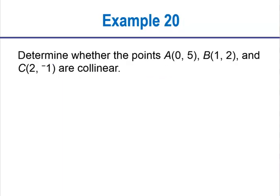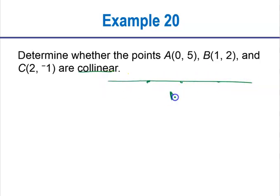Alright, here we go. Determine whether the points (0,5), (1,2), and (2,−1) are collinear. What does that mean we should do? This is using the distance formula. To determine if points are collinear, that means they don't make a triangle — because if you have three collinear points, they lie on a single line. A line can be drawn through them, so it's not a triangle.